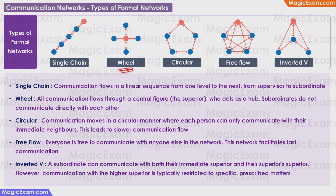In a wheel network, all communication flows through a central figure, the superior, who acts as a hub. The subordinates do not communicate directly with each other, because all communication has to flow through the superior.